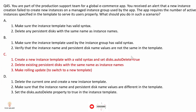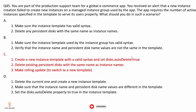Option C: create a new instance template with valid syntax, set disk auto-delete equal to true, delete existing persistent disks with the same name as the instance name, and make a rolling update to switch to the new template. Since we cannot update an existing template, creating a new one and performing a rolling update is the best approach to resolve the issue and ensure proper instance creation.